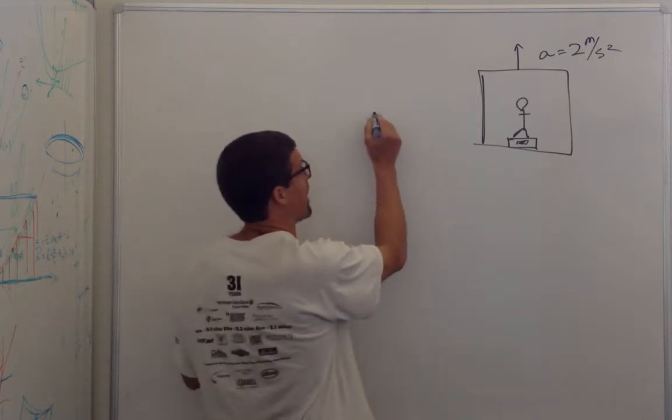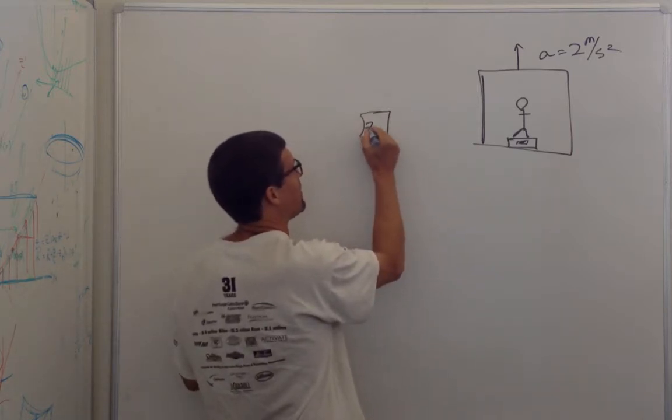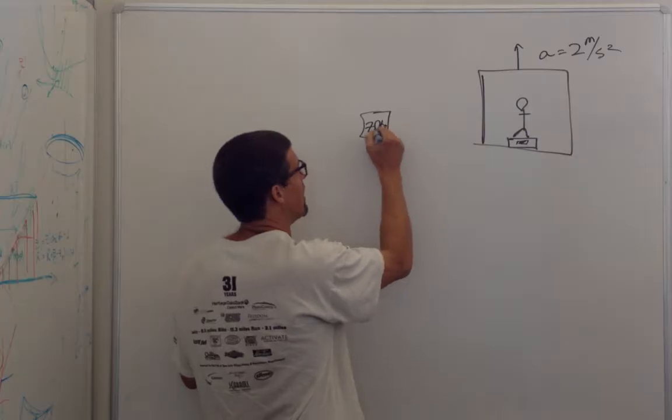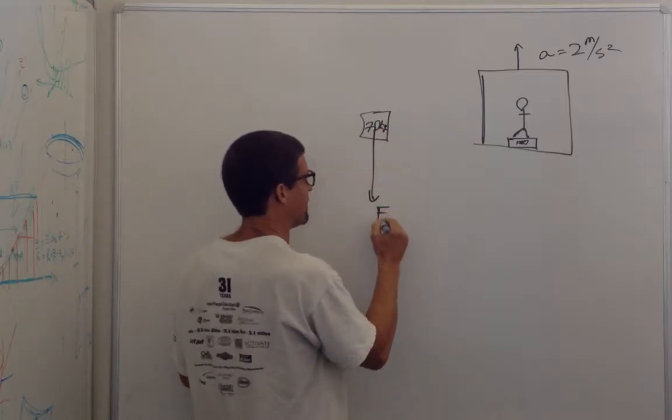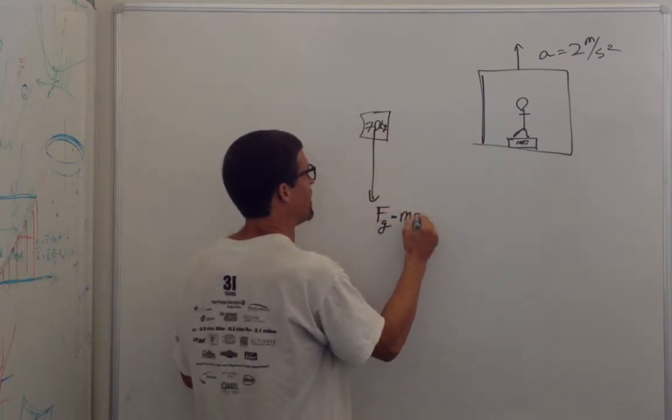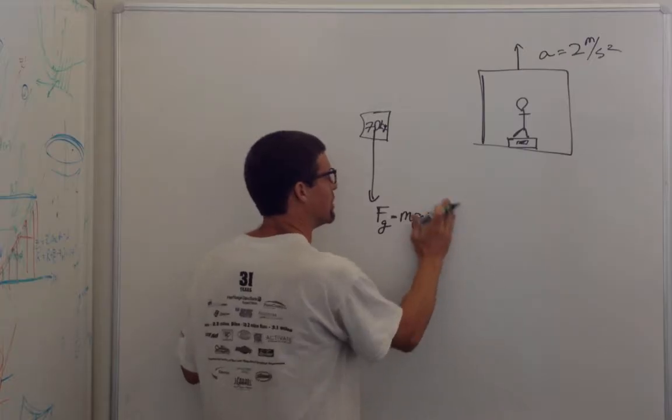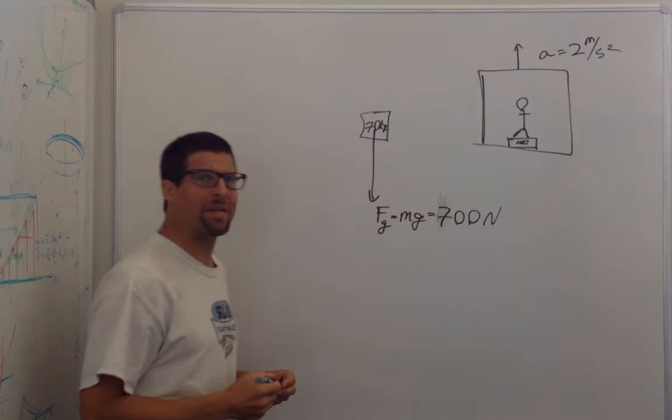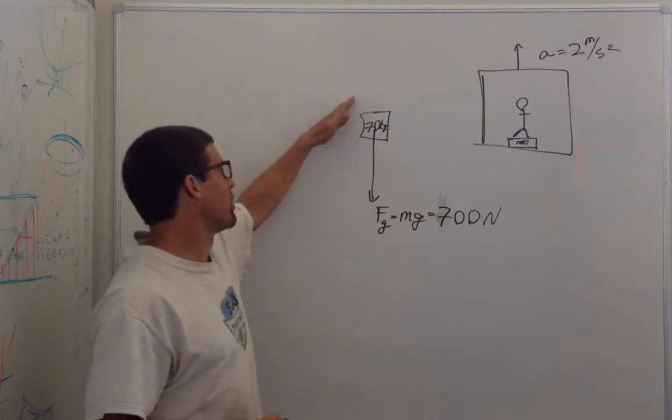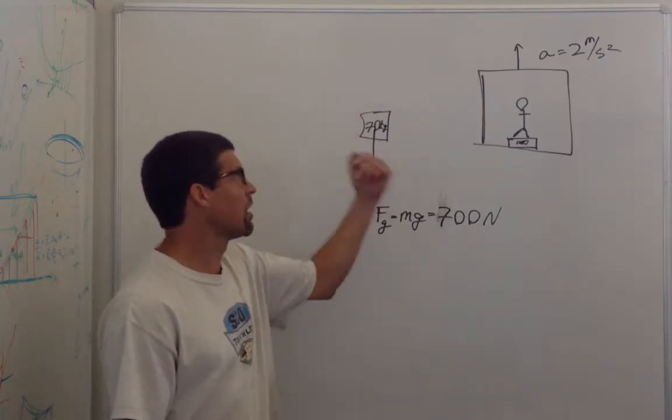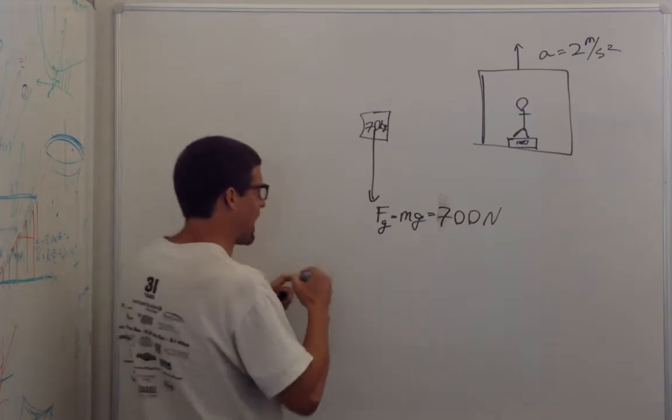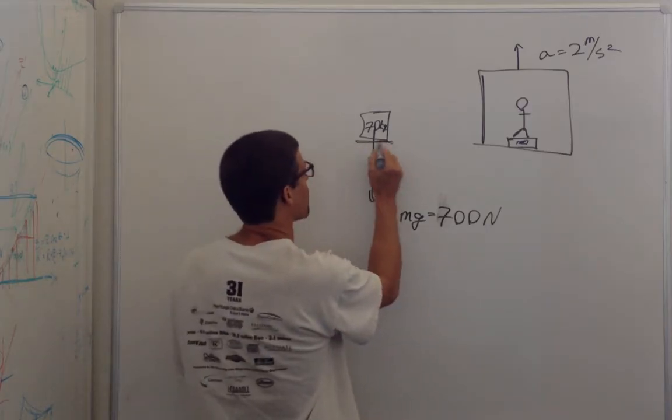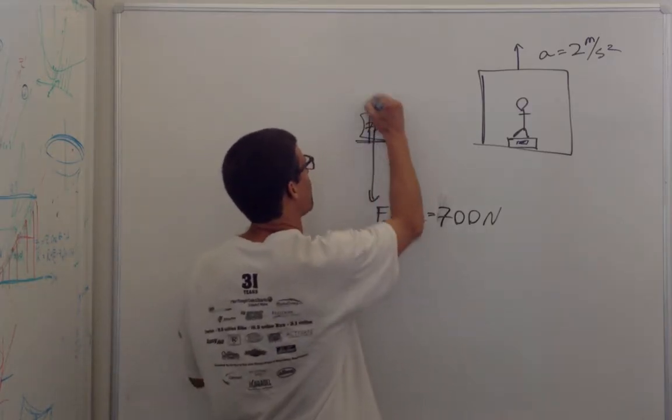Let's take a look at the forces on my body. Here I am at 70 kg and there's a force of gravity which is equal to mg which is equal to 700 newtons. That's a force pulling me down. Now if that were the only force I'd be accelerating downward but I'm accelerating upward. I've got a normal force right here.